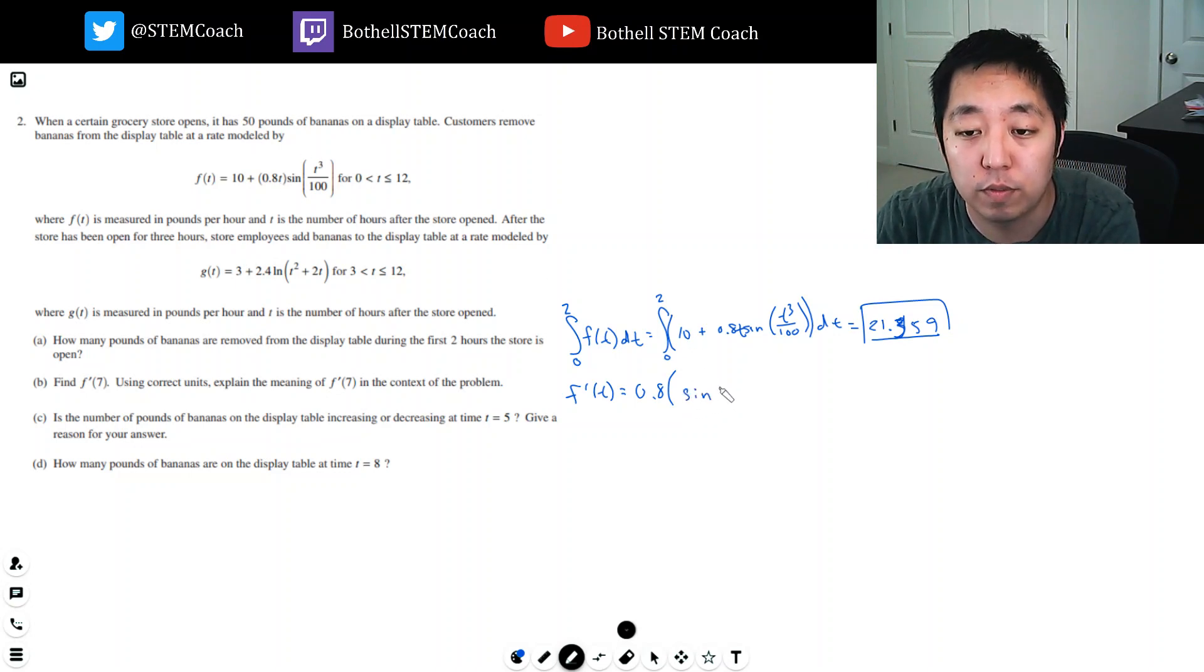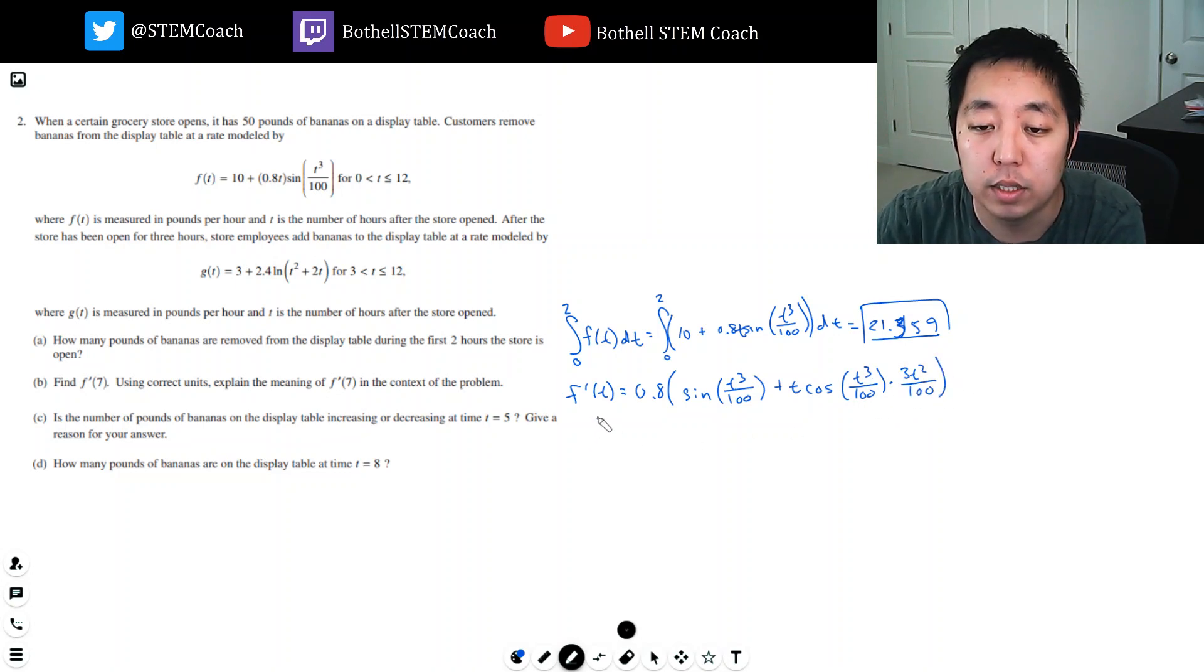It would be the derivative of the first, which is just 1, plus t times the derivative of the second, which would be cosine t cubed over 100. But since the inside of this isn't just t, I'm going to do chain rule. So that's times 3t squared over 100, the derivative of the inside. So the derivative at 7, when I plug it into my calculator, I get minus 8.120.